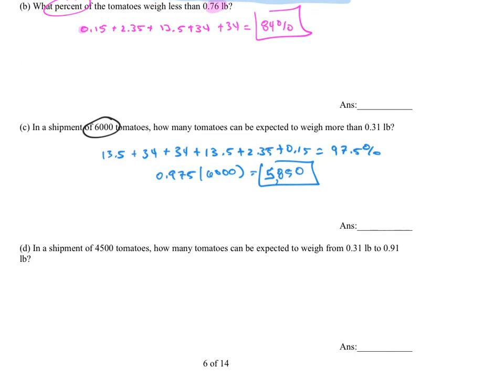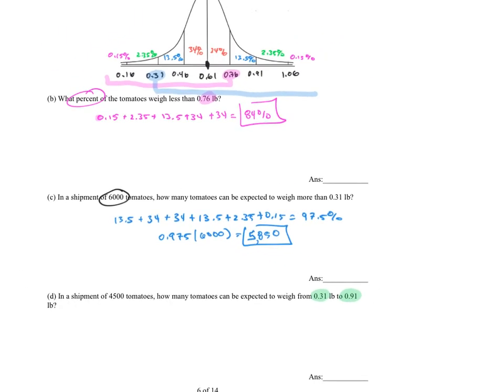Let's look at the next one. It says in a shipment of 4,500 tomatoes, how many tomatoes could be expected to weigh from 0.31 to 0.91? So we'll do a different color on this one about green. So I'm looking from 0.31 to 0.91. Go up on the chart. Look at 0.31 to 0.91. Here's 0.31. Here's 0.91. We're going to add everything in between those two numbers right there. So let's start with our percentages.